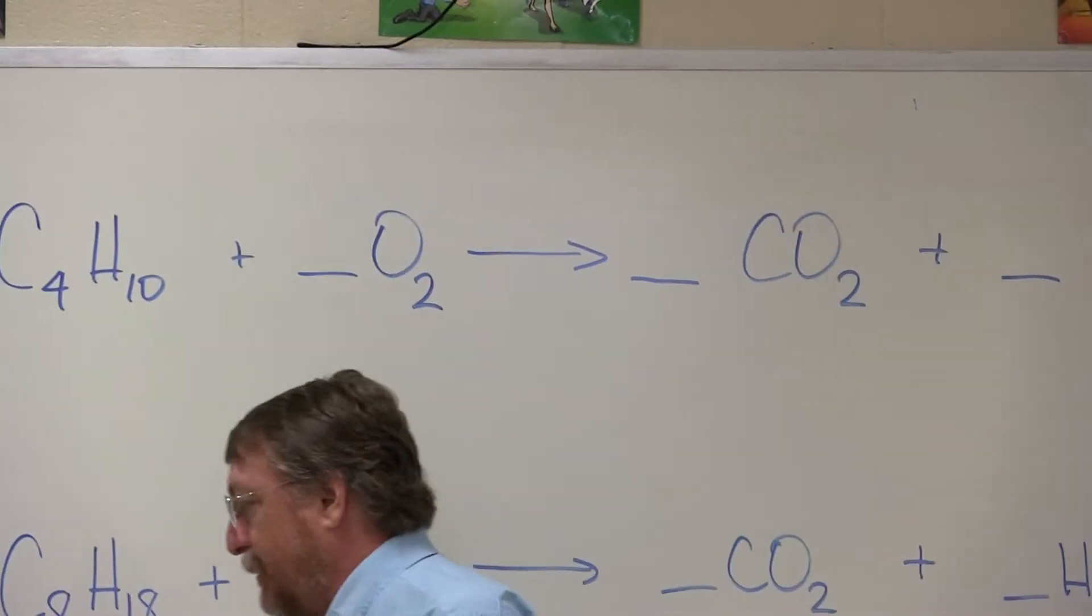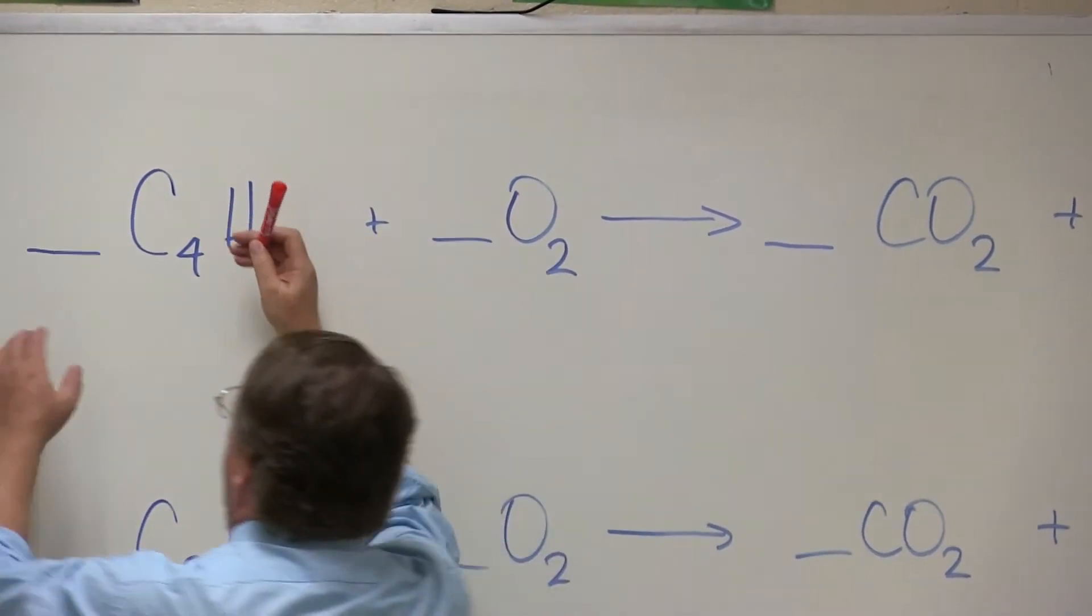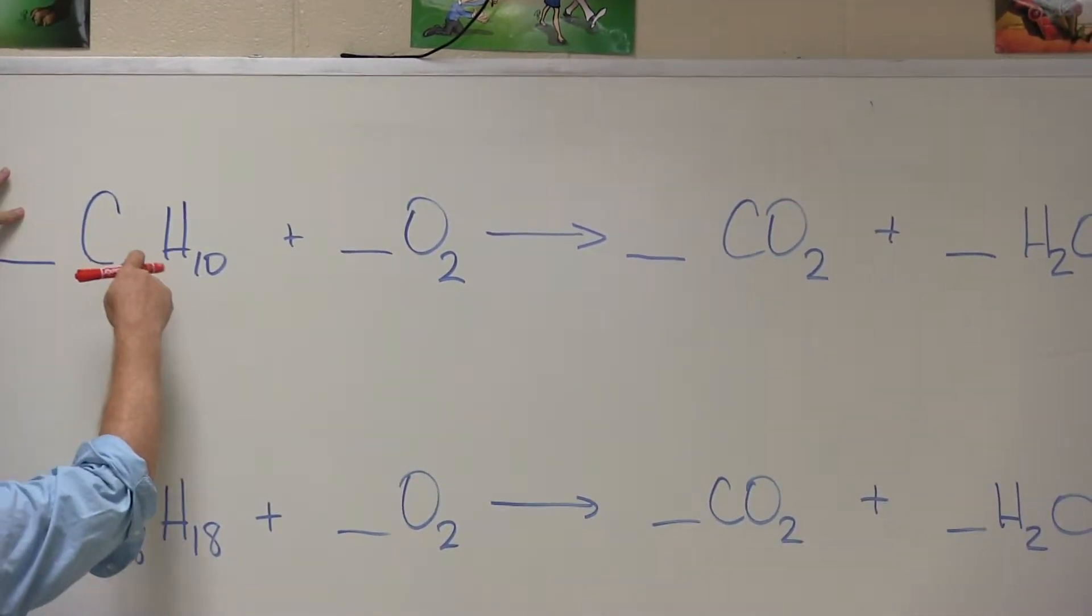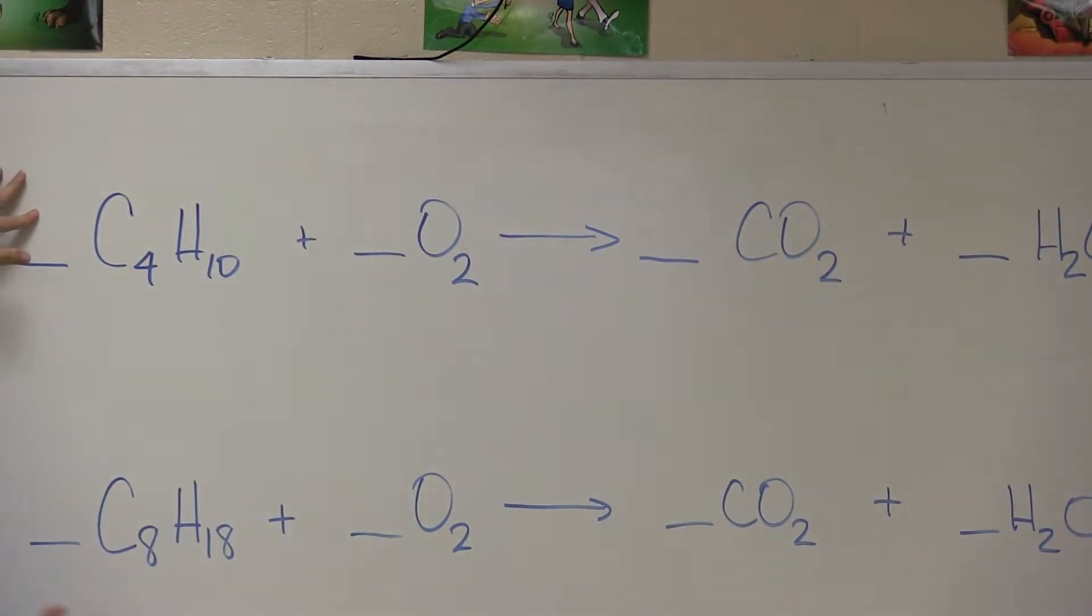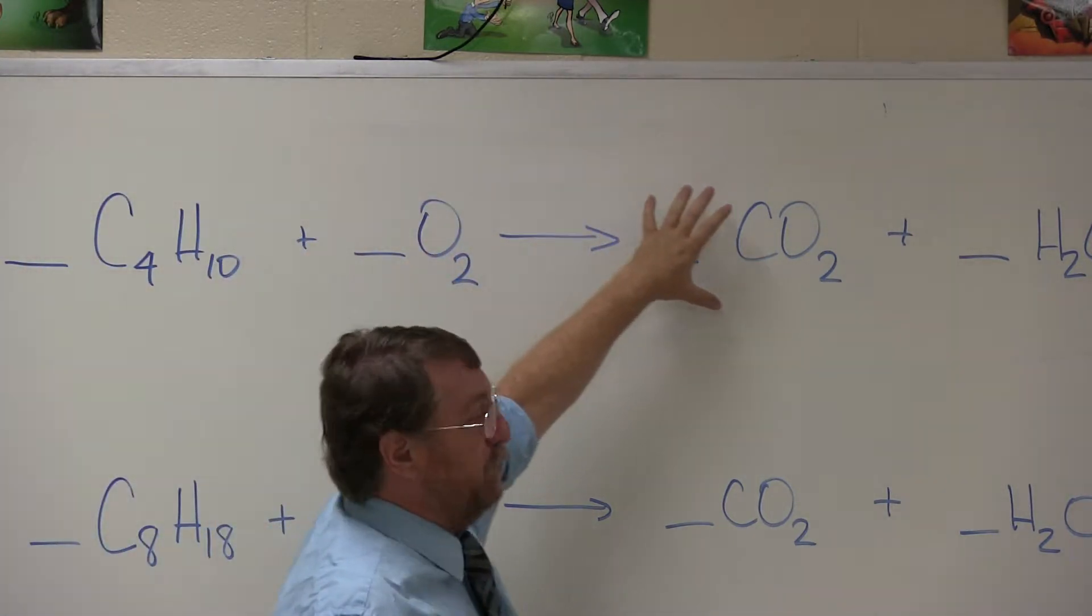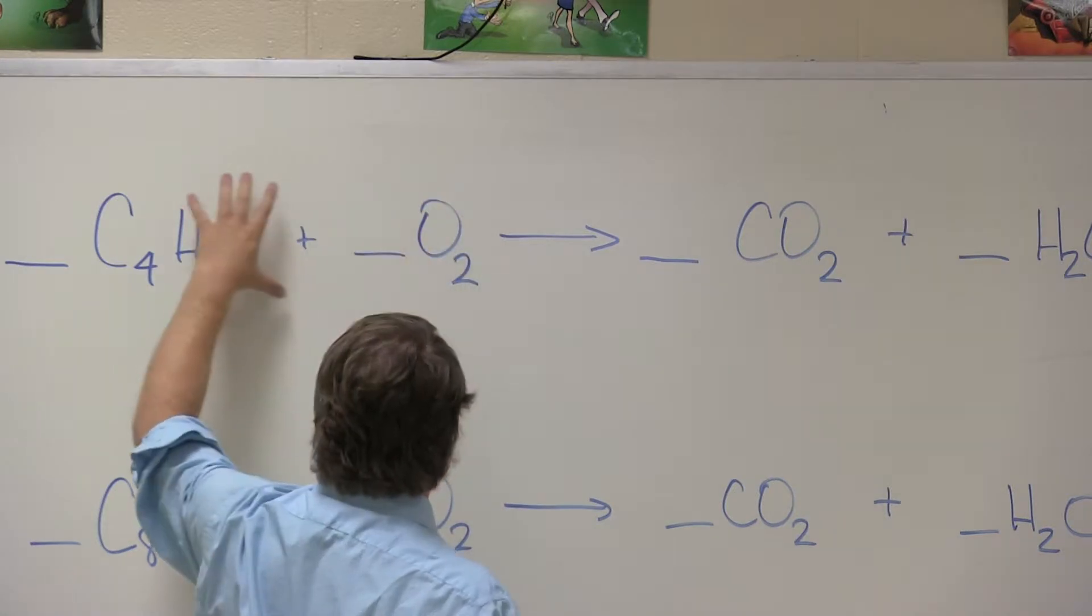So we're going to balance this. To balance it, we're going to make sure the number of carbons total, which this is called our coefficient, we're going to multiply the coefficient by the subscript to get how many atoms are actually there. So the total number of atoms of carbon on the left must equal the total number of carbon atoms on the right. Same thing is true with oxygen and hydrogen.